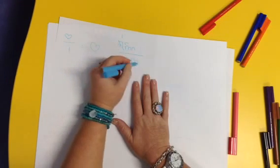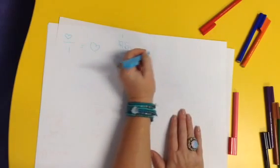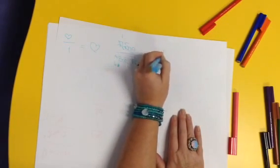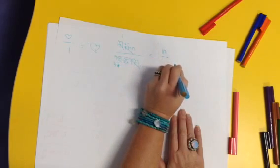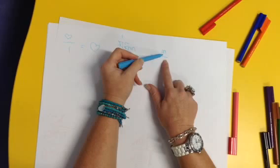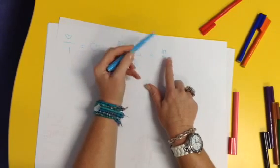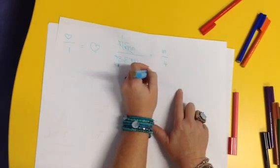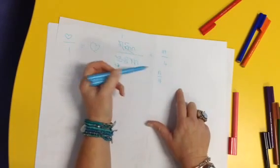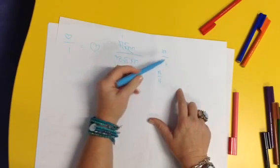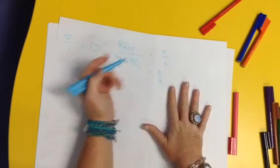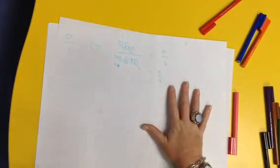Now we've got an m and an m, so we can cross those out. So now we are left with 1n over 4. Now we don't ever have a 1 in algebra. Remember, we don't see it. So our answer would actually be n over 4. Because we know that that's 1 on its own. So don't show me 1s. I don't want to see any 1s. Just like I don't like seeing the times sign, I don't want to see any 1s.